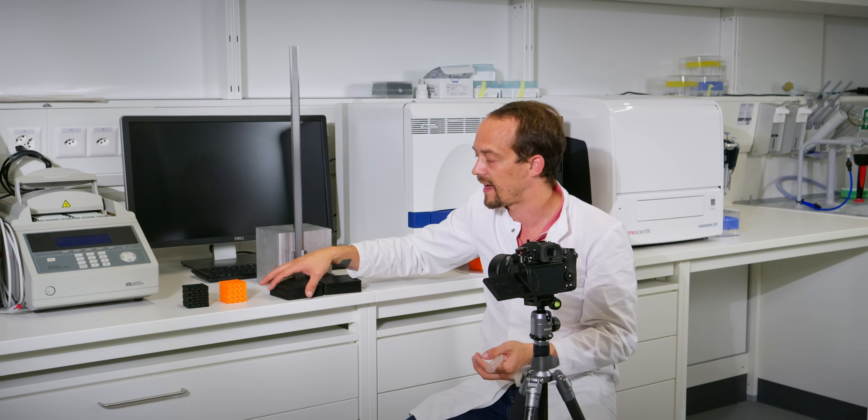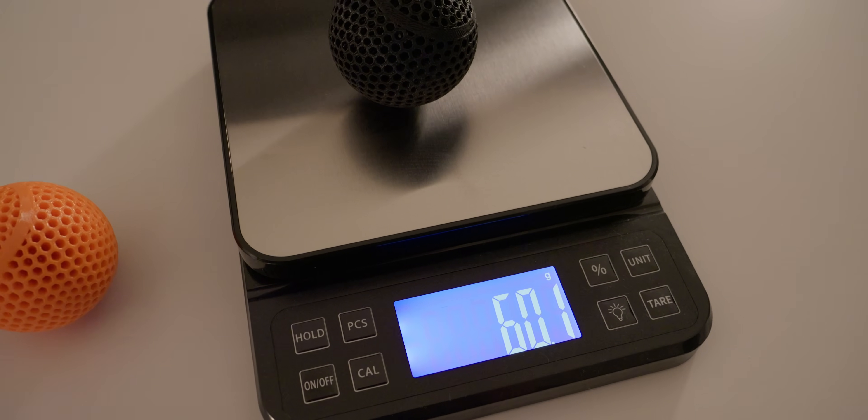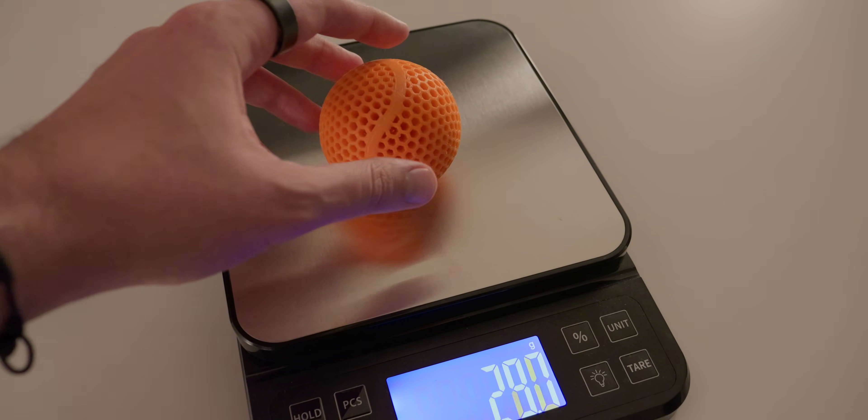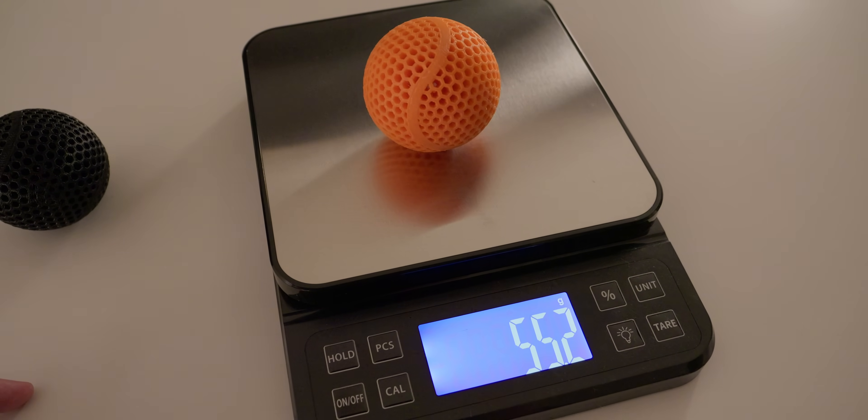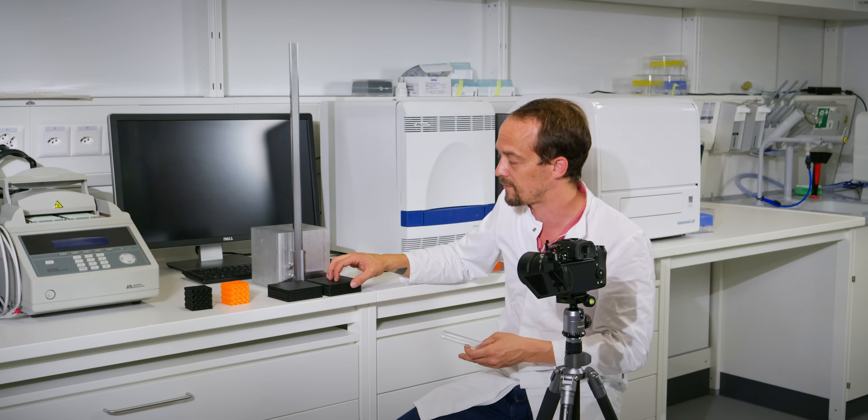So the claim that it's lighter, I mean, that's nothing that I can't check. I just weight those. And yes, PEBA is about 20% lighter than TPU. So that's cool. For example, for drone protectors or stuff like that.